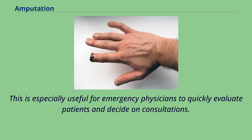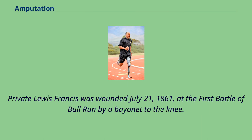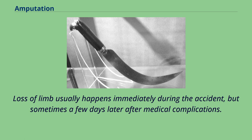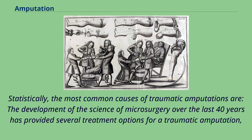This is especially useful for emergency physicians to quickly evaluate patients and decide on consultations. Traumatic amputation is uncommon in humans. Loss of limb usually happens immediately during the accident, but sometimes a few days later after medical complications. The development of the science of microsurgery over the last 40 years has provided several treatment options for a traumatic amputation.